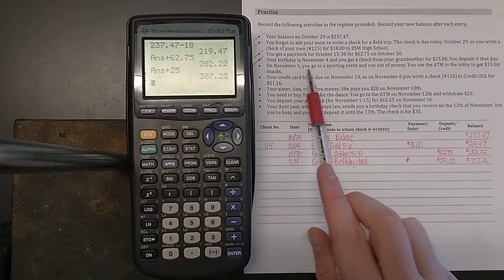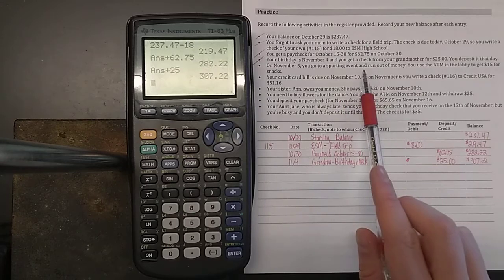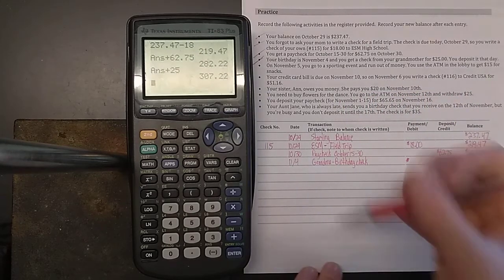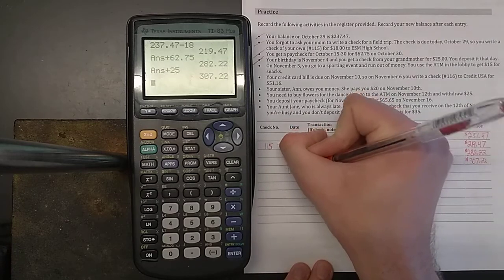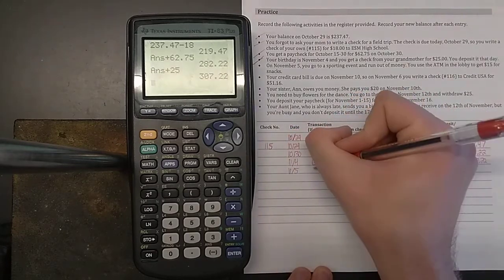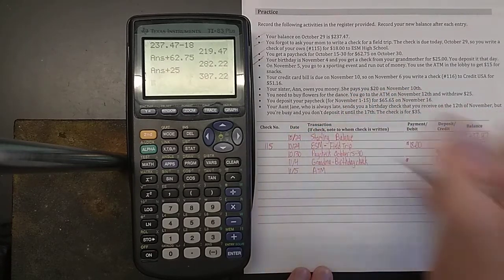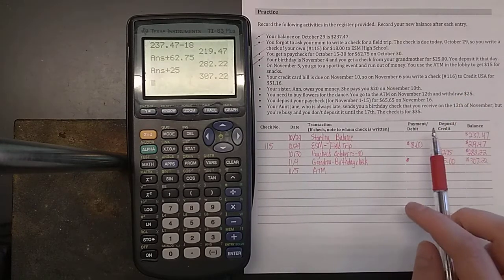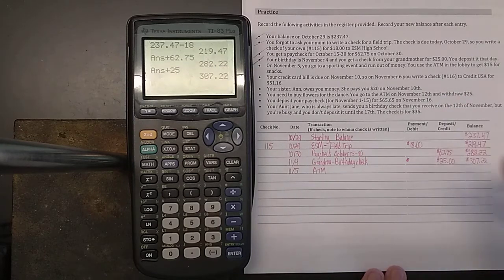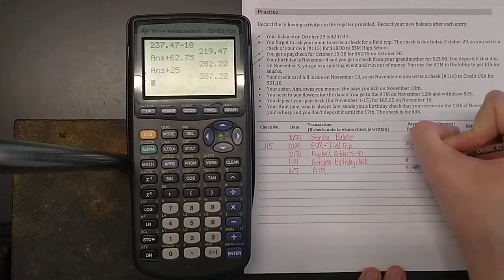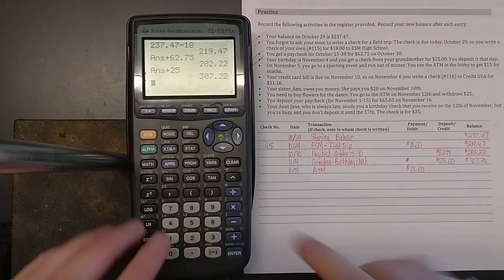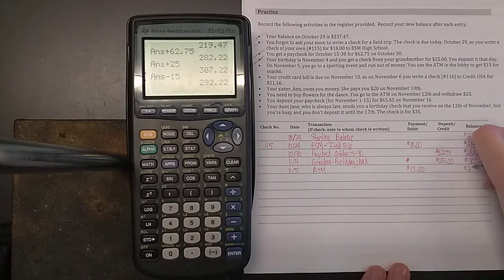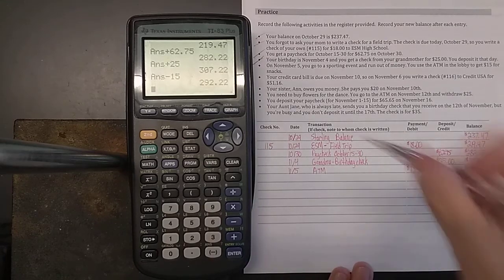On November 5th, you go to a sporting event and run out of money. You use the ATM in the lobby to get $15 out for snacks. So this is on November 5th, no check number involved. You went to the ATM. Now you're taking money out of your account. Therefore it goes in the payment slash debit column. And therefore we're going to subtract $15 from our previous balance. You're now left with $292.22 in your account.